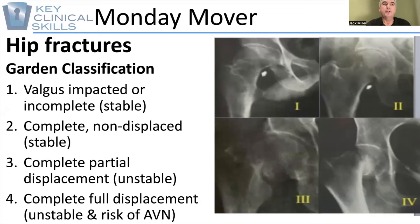It has four different components to it. Level one is a valgus impacted or incomplete, and this is considered a stable fracture. It is also complete but non-displaced, again stable, and both of these may be conservatively managed.